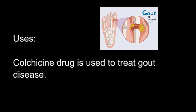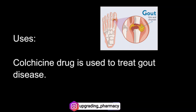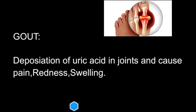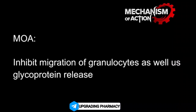Colchicine drug is used for the treatment of gout. Now we are going to see what is gout and the causes of gout. Gout is caused by deposition of uric acid in joints and causes pain, redness, and swelling. Gout is also caused by migration of glycosides and glycoprotein release.